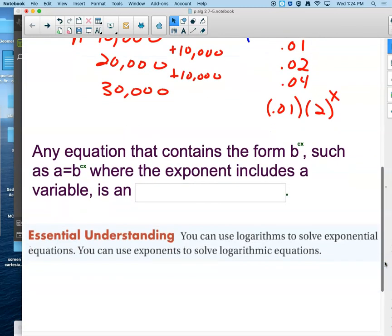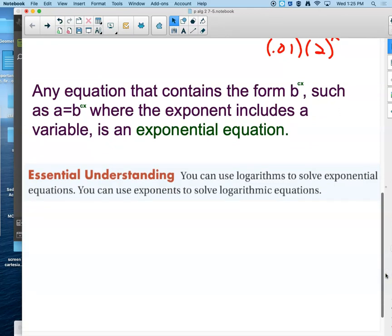So any equation that contains the form b to the cx, such as a equals b to the cx, where the exponent includes a variable, that's called an exponential equation. So what was happening in prize B was an exponential equation. The essential understanding is you can use logarithms to solve exponential equations, and you can use exponents to solve logarithmic equations.